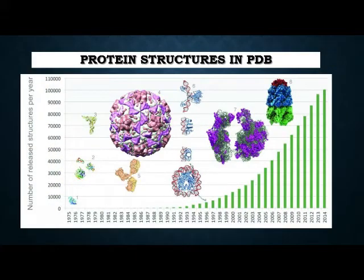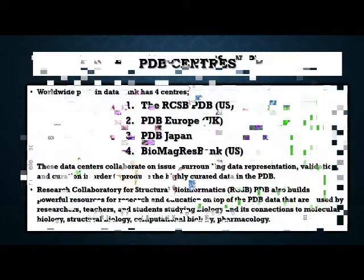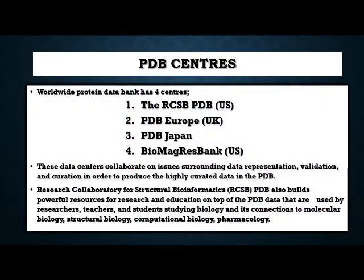The protein structures in PDB increased over the years. The PDB has four data bank centers: the RCSB in California, PDB in Europe, PDB in Japan, and the BMRB Research Center in the US. These data centers collaborate with each other for data representation, validation, and curation in order to produce highly curated data in the PDB.